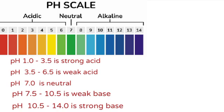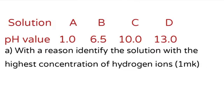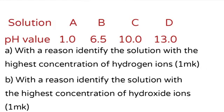Note: acid rain is a weak acid, which has a pH value of 6.5. Here we have a sample quiz. Solution A has a pH of 1.0; Solution B has a pH of 6.5; Solution C has a pH of 10.0; Solution D has a pH of 10.0. With reasons, identify the solution with the highest concentration of hydrogen ion. The answer is Solution A, because a strong acid has a high concentration of hydrogen ions, and pH 1.0 is a strong acid. For part B — lowest concentration of hydroxide ion — you can try that one.